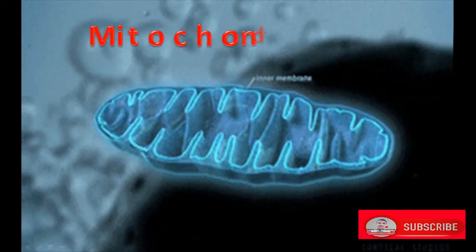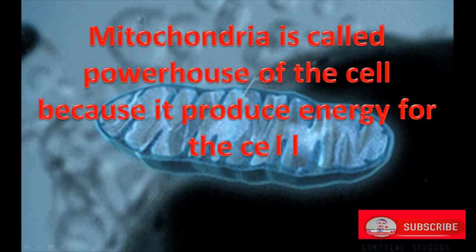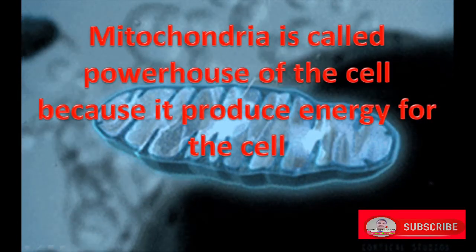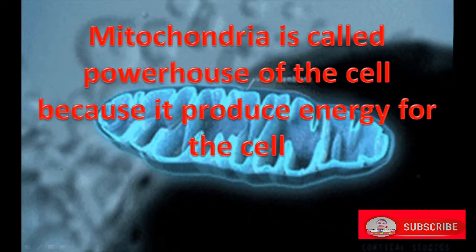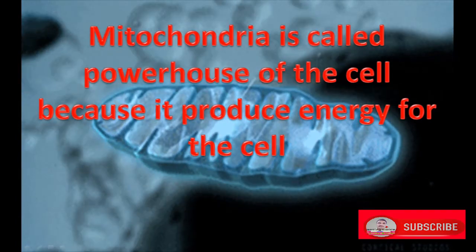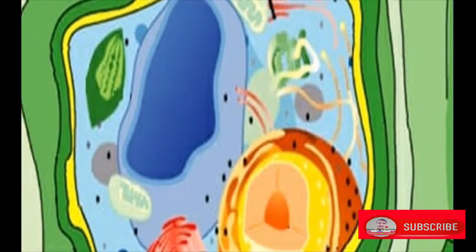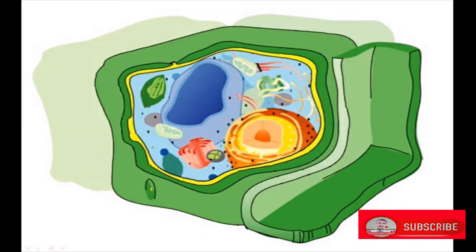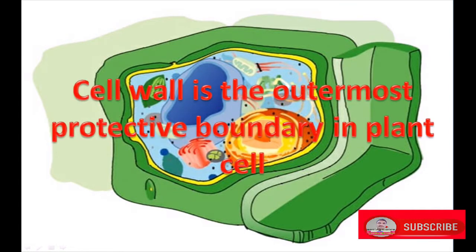Mitochondria is called the powerhouse of the cell because it produces energy for the cell. Plant cells have an outermost rigid covering made up of cellulose, which is called the cell wall. It is the outermost protective boundary in plant cells.